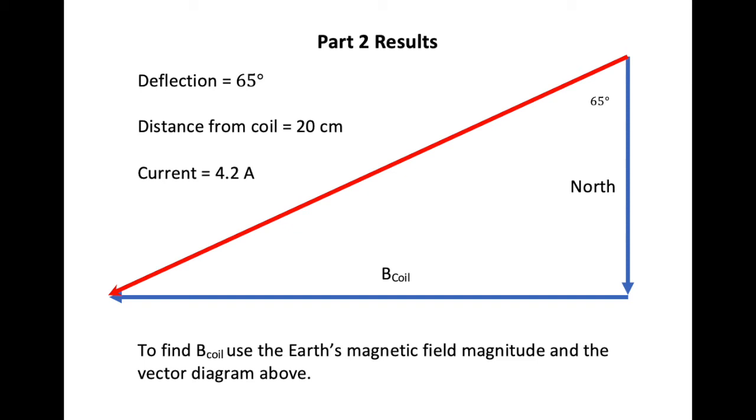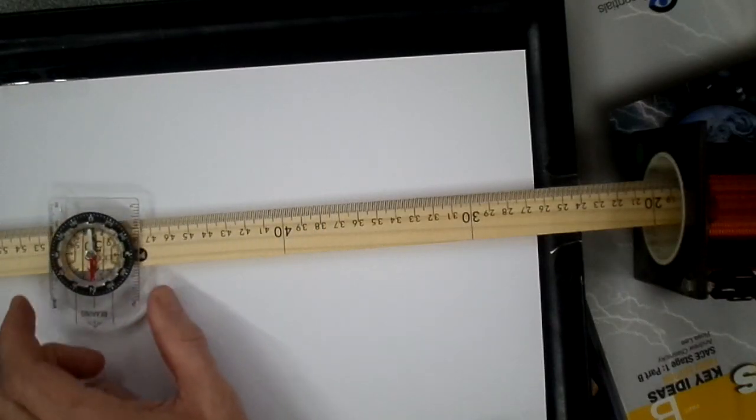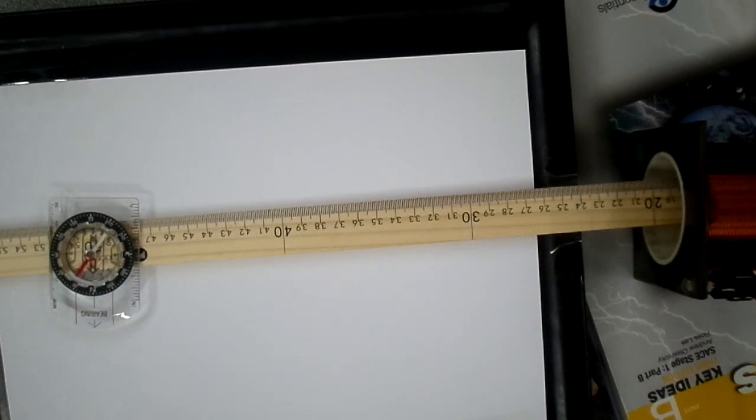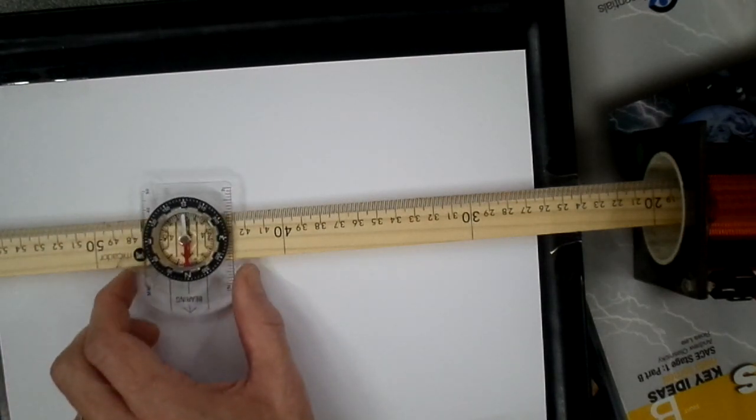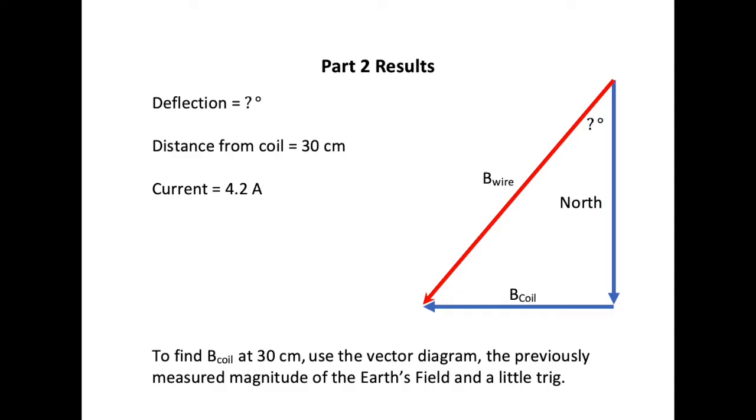Using this information, we can find the magnitude of the field due to the solenoid at this point of 20 centimetres by building a vector diagram that incorporates the observed deflection of the compass and the value for the earth's magnetic field that was found in part 1. I hope you enjoyed this video looking at our task 4 experiment. These images that you're seeing now are just some more images I took from the compass as it moved further away from the solenoid. You might find them interesting to find the magnetic field strength at these points.